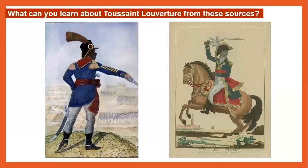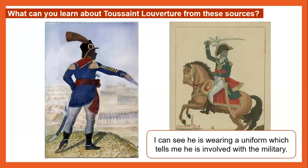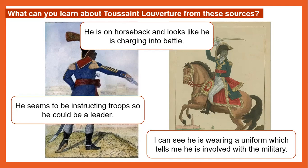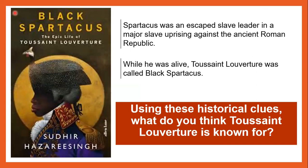What can we learn about Toussaint Louverture from these sources? Have a look at the images in front of you. If you're at home, have a think for yourself. Look at his uniform, his surroundings, and what he's holding. We can see that he's wearing a uniform, which tells us he's involved with the military. He seems to be instructing troops, so he could be a leader. He is on horseback and looks like he's charging into battle. Spartacus was an escaped slave leader in a major slave uprising against the ancient Roman Republic, and Toussaint Louverture was called Black Spartacus. Using these clues, what do you think Toussaint Louverture is known for?